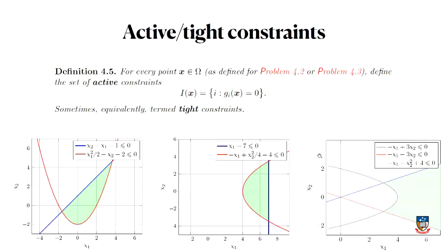Some important definitions: we talk a lot about active constraints. The set of active constraints are the places where these g functions are equal to zero — specifically, the indices of the functions that equal zero. For example, if the blue function is number one and the red function is number two, points on the straight blue line form the active constraint set containing index one, points on the red parabola give active constraint set containing index two, and corner points where both curves meet give the active set {1, 2}. It's the way of defining the boundaries.